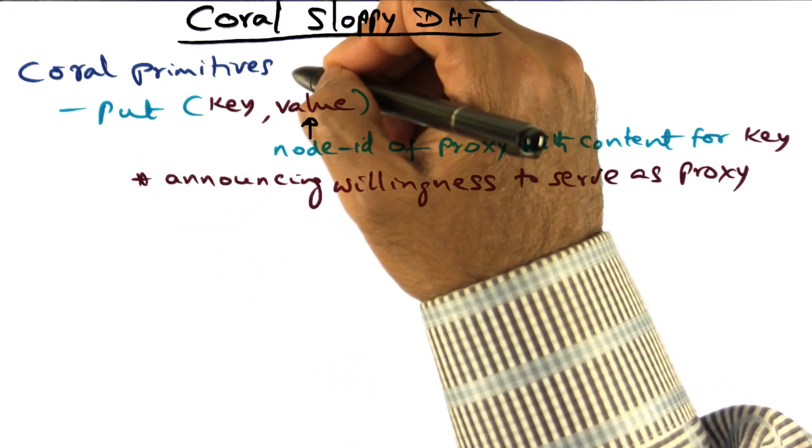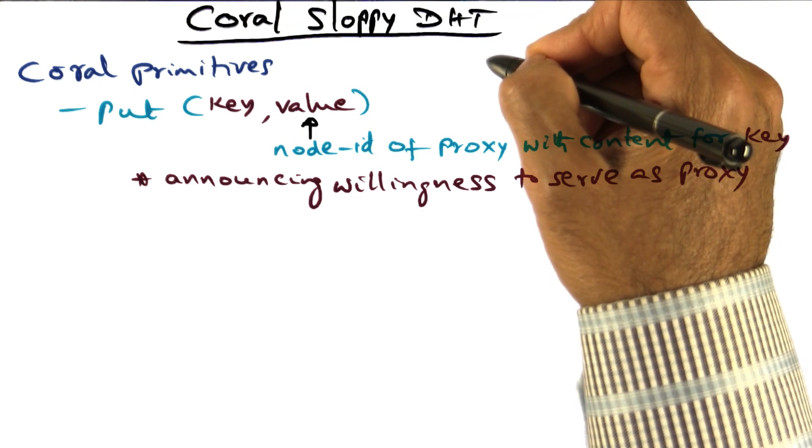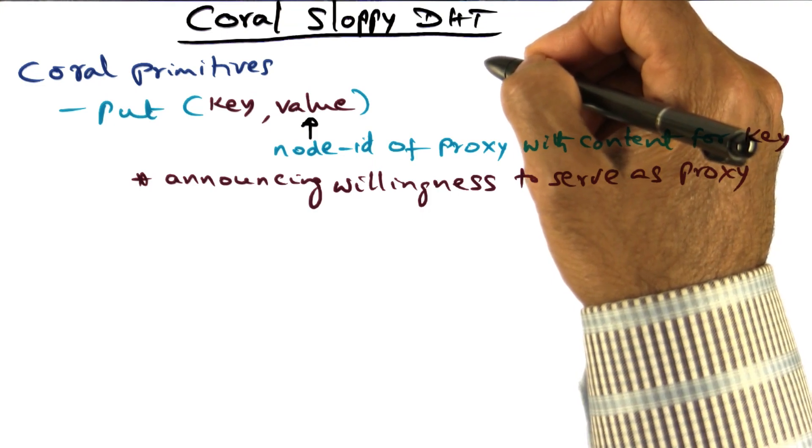Now let's discuss the primitives that are available in Coral for manipulating the sloppy DHT, in particular the put and get operation.